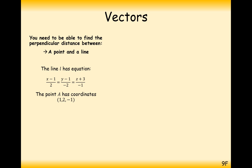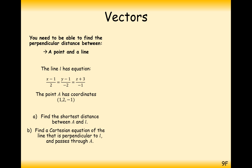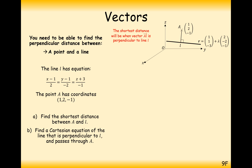So this is the graph, and this is the question we're going to look at here. The line equation is: x minus 1 divided by 2, y minus 1 divided by minus 2, and z plus 3 divided by minus 1. The point is (1, 2, minus 1). So calculate the shortest distance between this point and line.